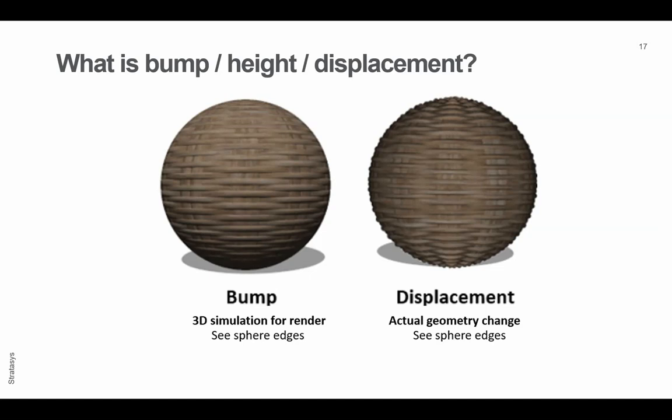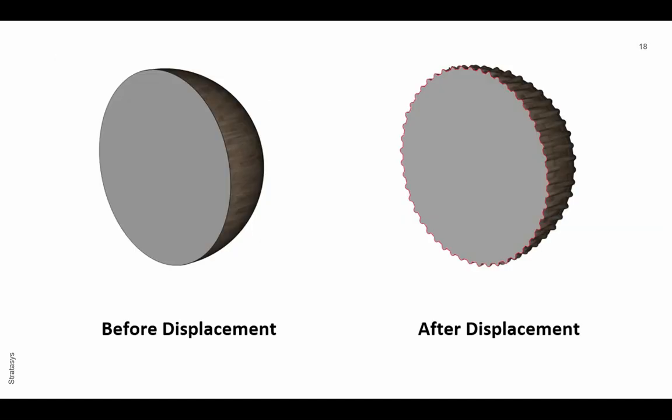I've altered my underlying geometry. I've added triangles to my relatively simple sphere in order to create this actual 3D effect rather than simulated 3D effect. So before the displacement, a smooth edge of the sphere, and afterwards an actual change in the geometry.